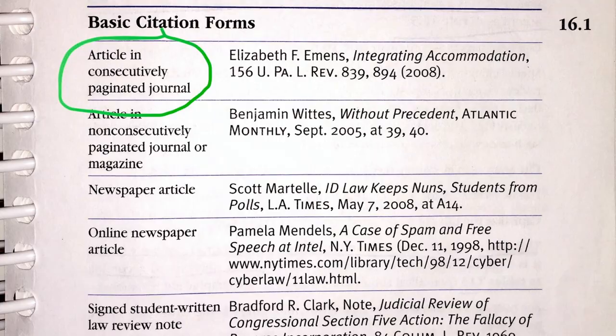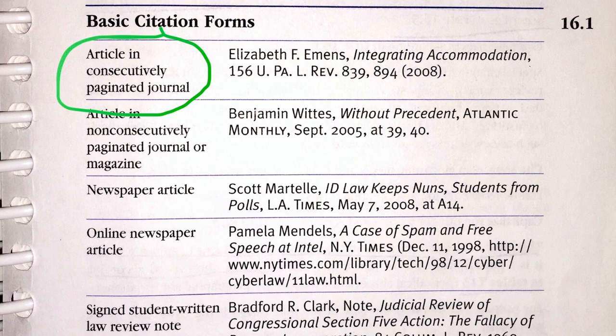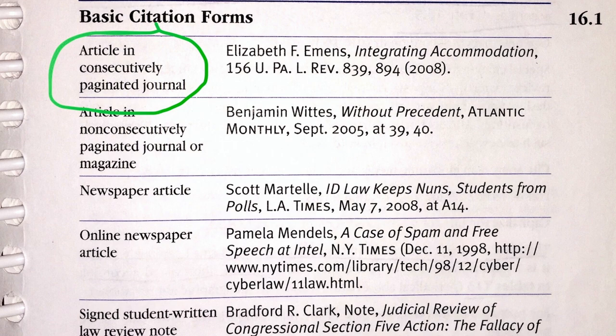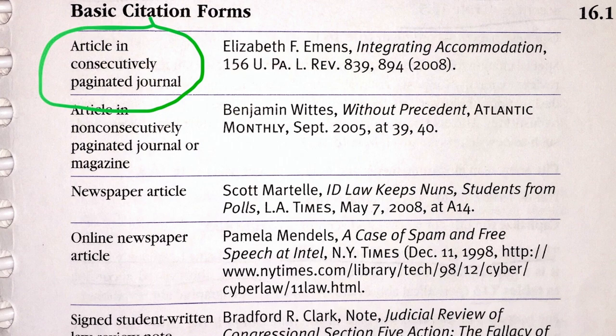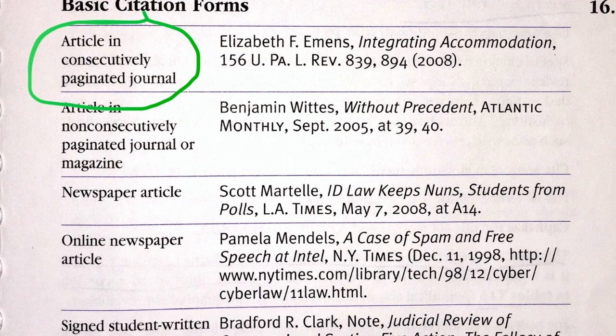Now that we know we are in a consecutively paginated journal, we can see the general structure we're going to use for the citation. We're going to have the author first, then the article name in italics, then the volume of the law review, the name of the law review, the page number the article starts on, the page number the specific citation refers to, and the year of publication.